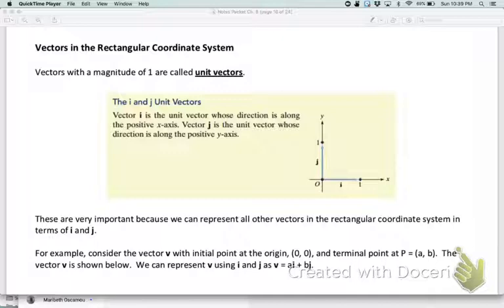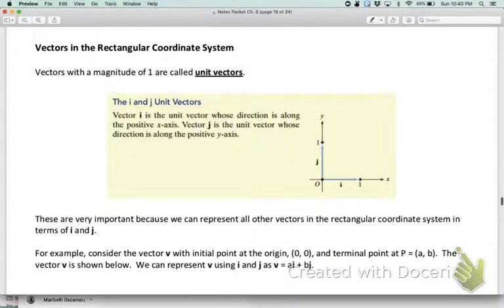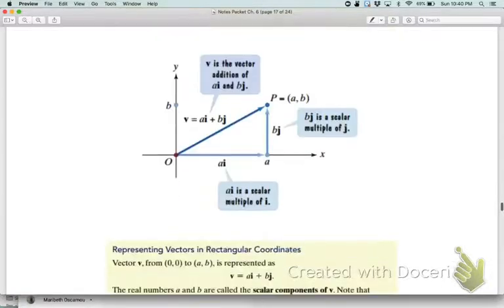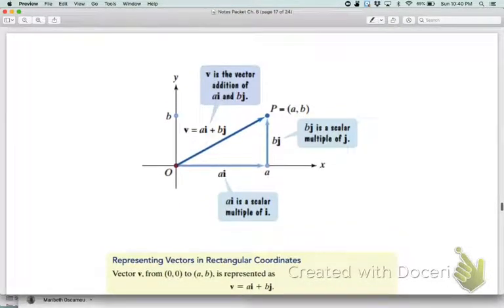We can choose to put a vector wherever we want. It's usually easy for us to calculate if we start with our initial point at the origin (0, 0). If it goes to (a, b), then we can write that as a times unit vector i plus b times unit vector j. If you turn the page, you have a visual representation of what that means.